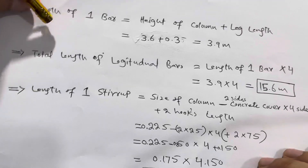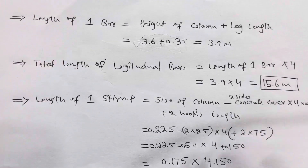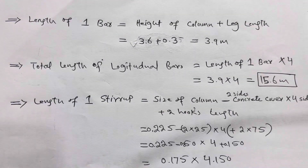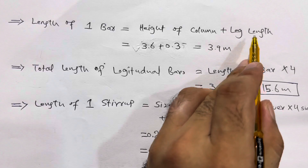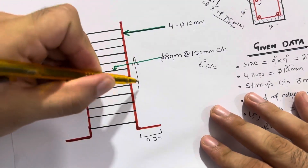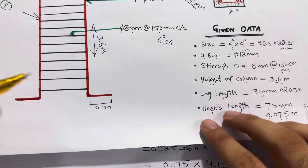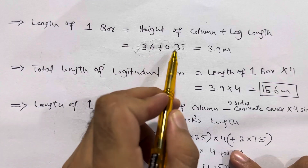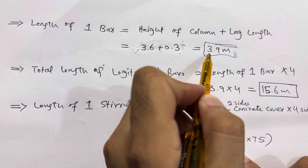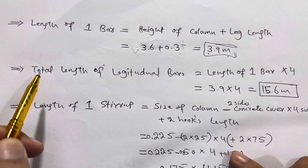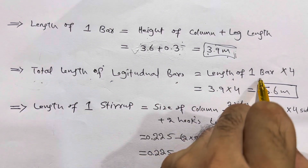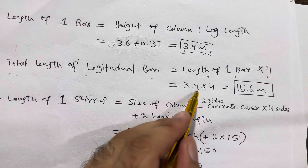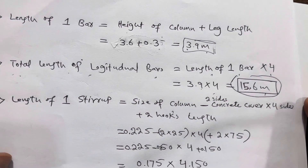Now, how to find the length of one longitudinal bar. The length of one bar equals the height of the column plus the leg length: 3.6 meter plus 0.3 meter equals 3.9 meter. The total length of longitudinal bars is length of one bar multiplied by four, so 3.9 multiplied by 4 gives us 15.6 meter total length of longitudinal bars.